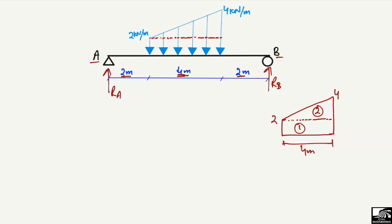For load one, we find the area of the rectangle. The area of the rectangle equals base times height. The base is 4 meters and the height is 2 kN/m, so the area comes out to be 8 kN. This is the equivalent load from the rectangular portion.